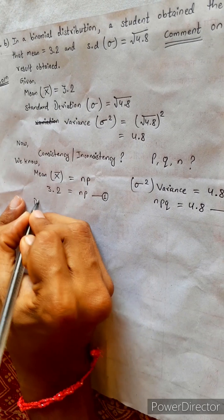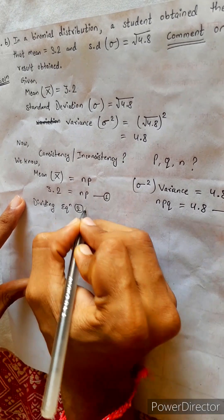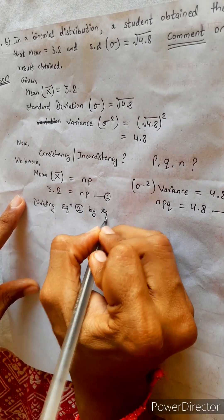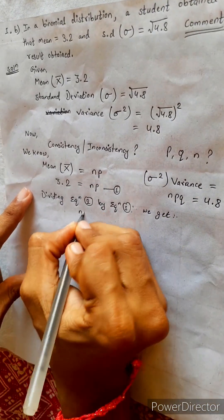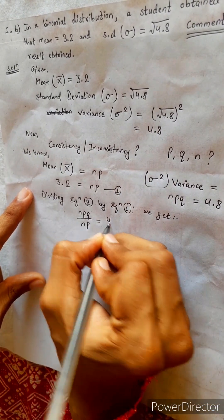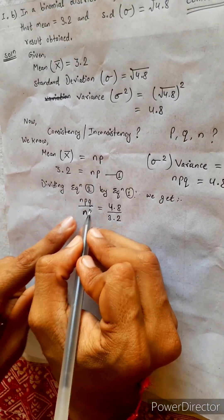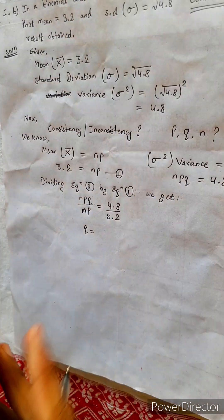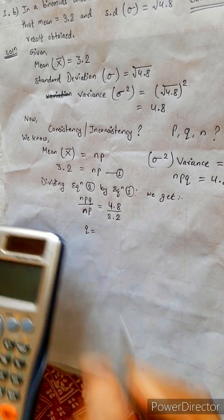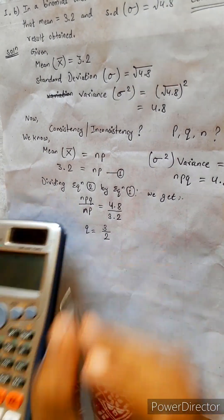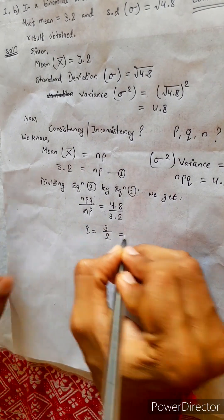Now divide equation 2 by equation 1. We get NPQ divided by NP equals 4.8 divided by 3.2. NP and NP cancel, so Q equals 4.8 divided by 3.2. Let's check on calculator: 4.8 divided by 3.2 equals 3 by 2, which is 1.5. So Q equals 1.5.